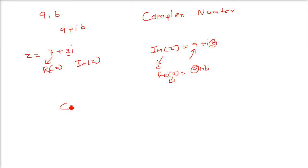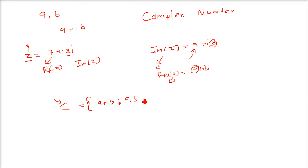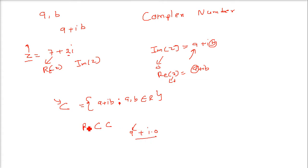So how do we write this in set form? We write C for complex numbers. Note that Z is also used for integers, so for the set we write C = {A + iB : A and B belong to real numbers}. Real numbers are basically a subset of C because every real number A can be written as A plus i·0, so every real number can be written as a complex number. Therefore, real numbers are a subset of complex numbers.